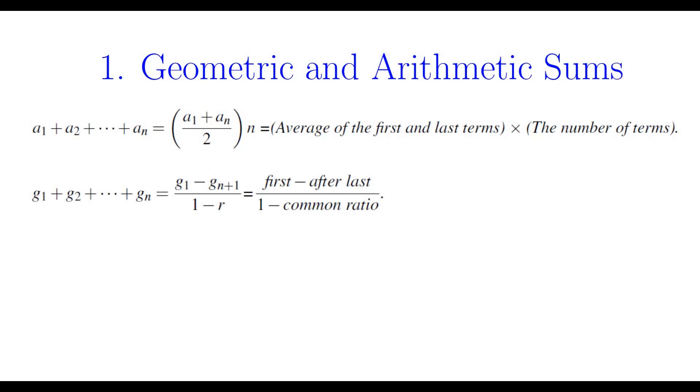The first method of evaluating sums is using geometric and arithmetic sums. To remind you, geometric sums and arithmetic sums are given by these formulas. The sum of terms of an arithmetic sequence is the average of the first and last terms multiplied by the number of terms. The sum of the terms of a geometric sequence is the first term minus the term after the last term divided by 1 minus common ratio.